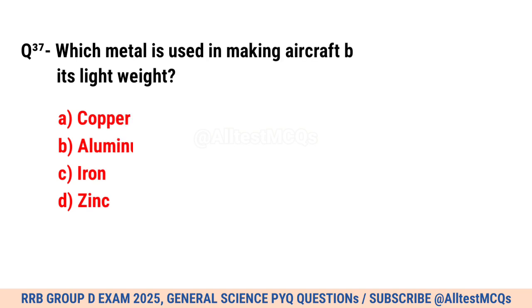Question No. 37. Which metal is used in making aircraft bodies due to its light weight? Correct option is B. Aluminum.